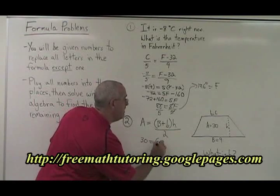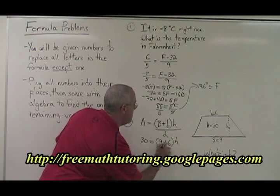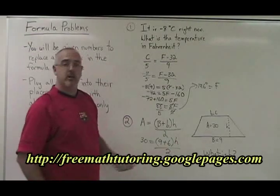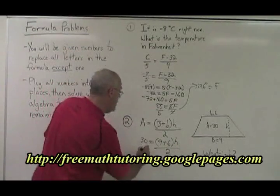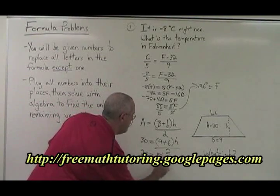30 equals bracket 9 plus 6 close bracket times H over 2. Our unknown is H. It's the only thing that we don't know. Let's start simplifying. 30 equals 9 plus 6 is 15H over 2.